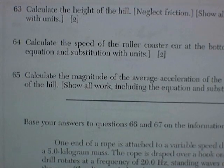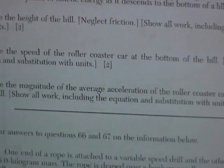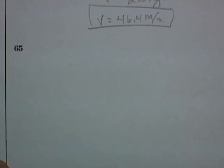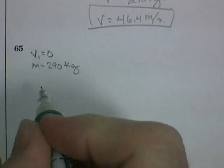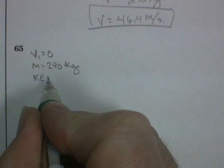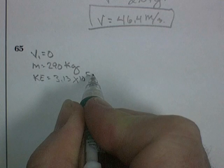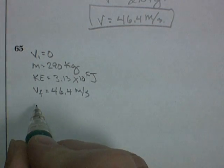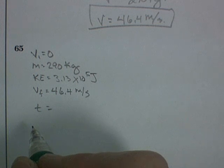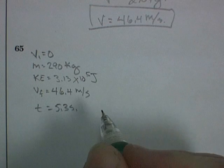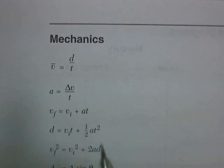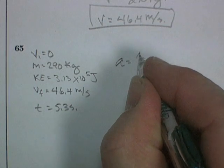And question 65. Calculate the magnitude of the average acceleration of the roller coaster as it descends to the bottom of the hill. All right. Average acceleration will be the next problem. Well, let's go. Velocity initial was 0. Mass was 290 kilograms. Yeah, I know you don't need all of this stuff, but I like listing it. Kinetic energy was 3.13 times 10 to the 5 joules. Velocity final was 46.4 meters per second. The time required to do this was 5.3 seconds. And we found some other stuff, but that might be enough.